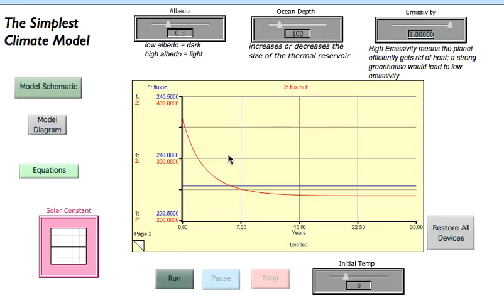And so look what happens initially. Let's take the energy in to begin with. That starts off with a value of about 240, roughly 239. And that doesn't change at all. All throughout this model run, it has the same value of about 240.